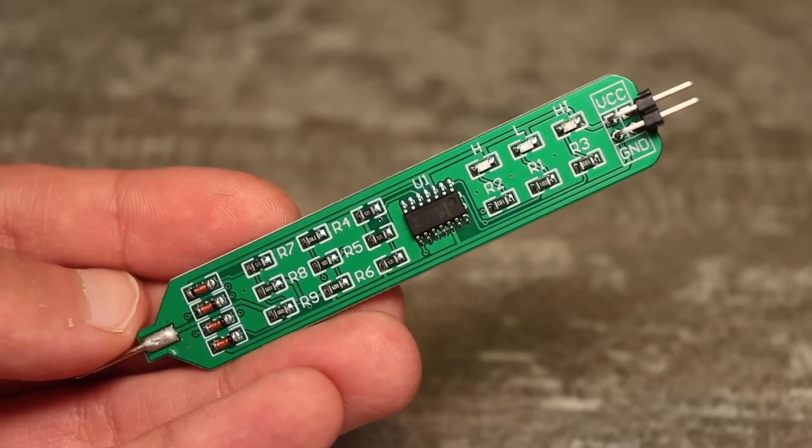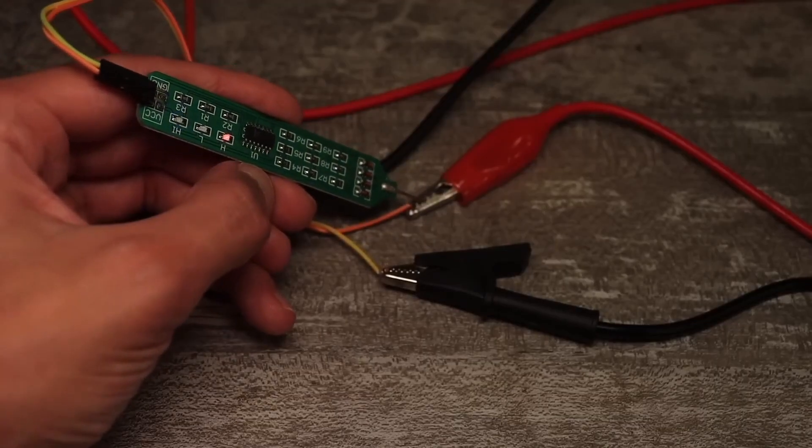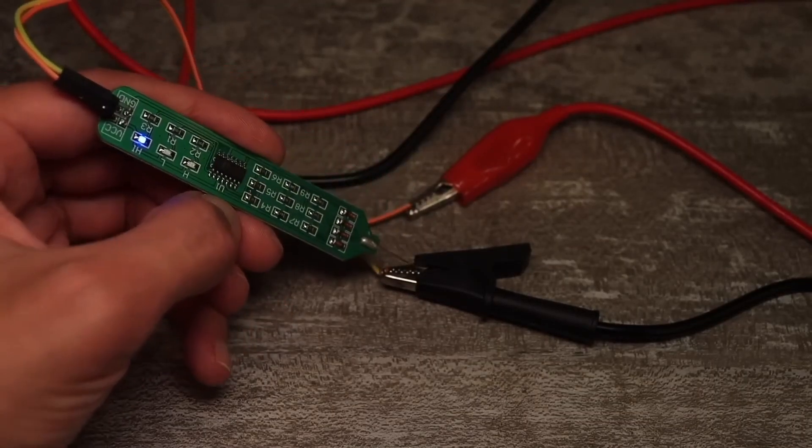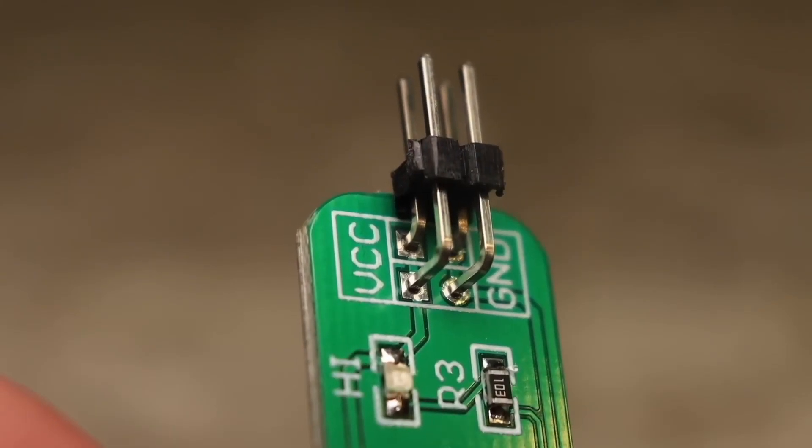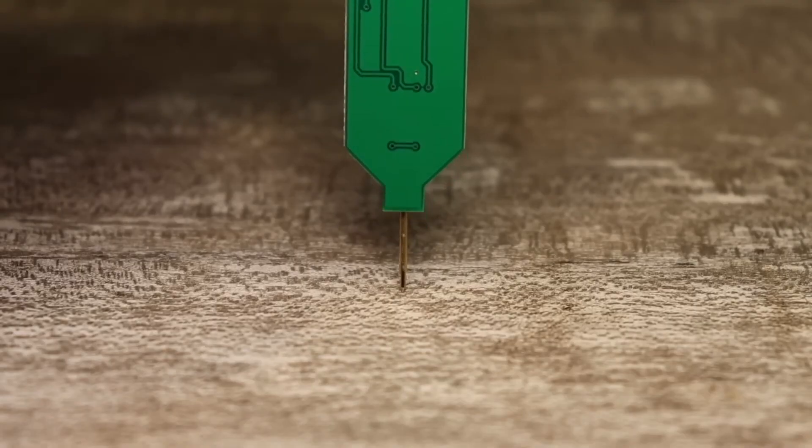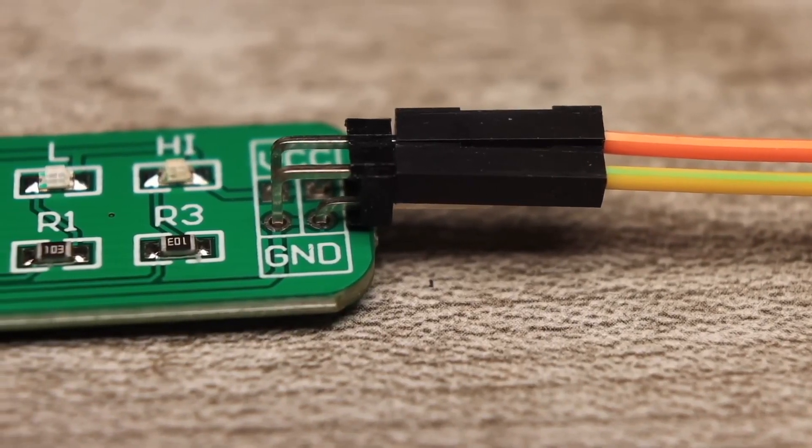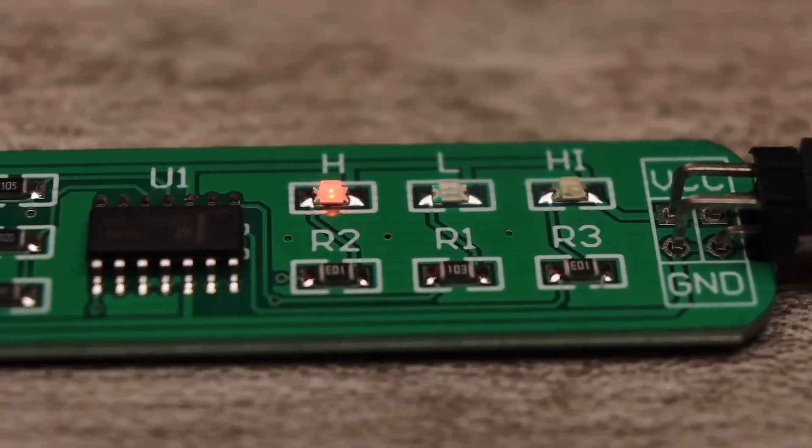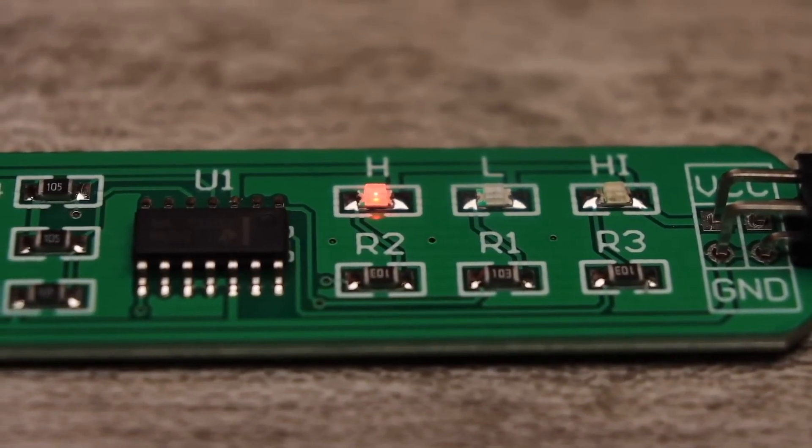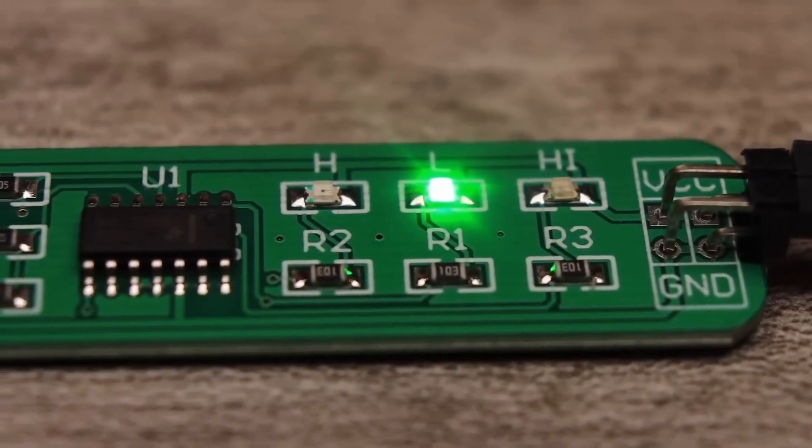Logic probe. This thing can be useful for quickly diagnosing all sorts of boards for the presence or absence of necessary signals. The probe has power leads and a measuring tip. It is powered by the same source as the board being diagnosed. If there is a high level on the probe, the red LED will light up. If there is a low level, the green one will light up.